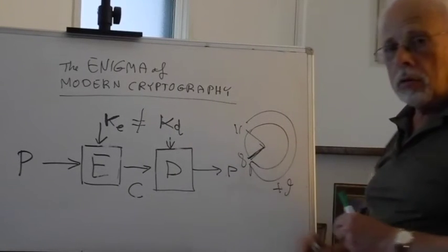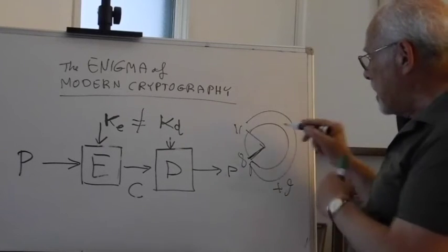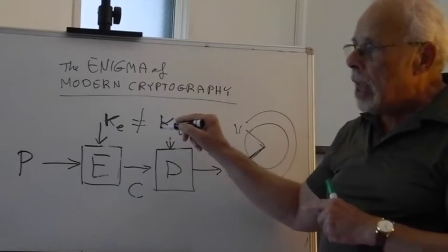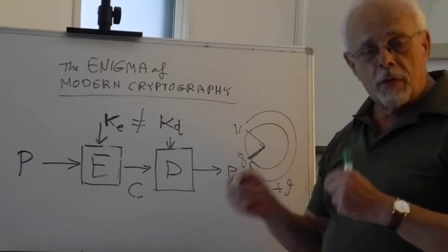So plus 9 and plus 3 are two different keys where one is reversing the other.